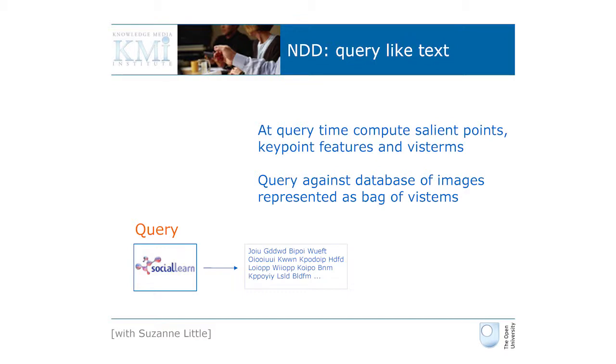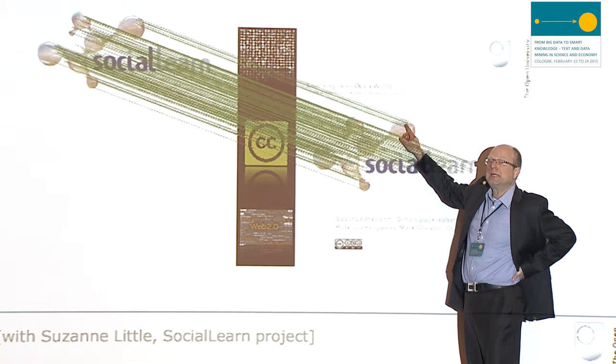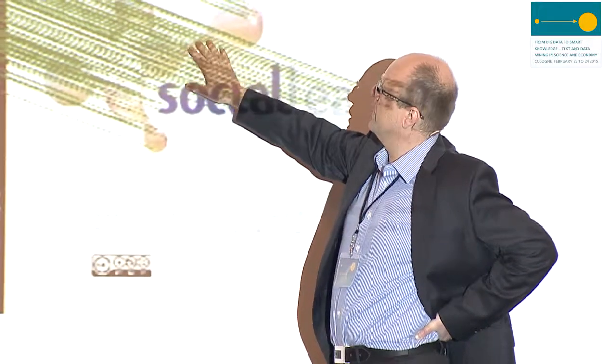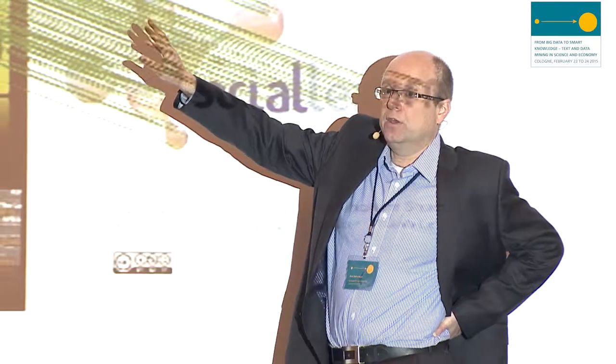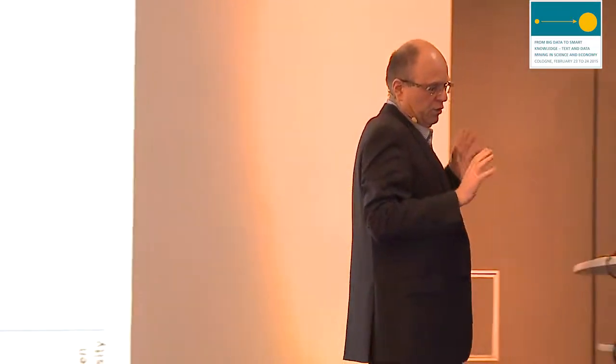Here is a query that is a logo. We find that logo in one of these pictures. We can check whether close-by points in the query map to close-by points in the target image — those are the spatial constraints — and if that's the case, the correlation of all those points all but ensures us that the query appears in one of those images. That's the standard technique used for roughly ten years to do near-duplicate detection well, and it's almost a solved problem.